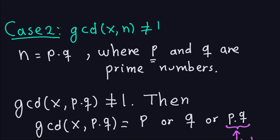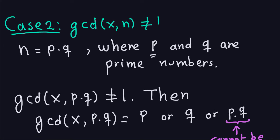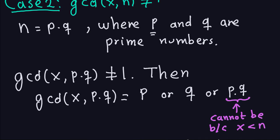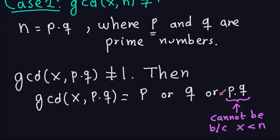Now, the possibility pq is not valid here. The reason is because the RSA requires that x, the plaintext, is strictly less than n. If you assume that GCD is pq, then pq — which is n — would divide x, and that's not possible because x is strictly less than n. So pq is not a possibility for the GCD between x and pq. It has to be either p or q.